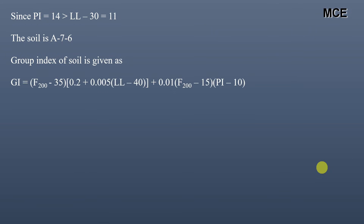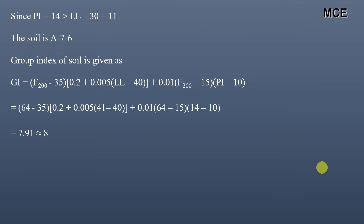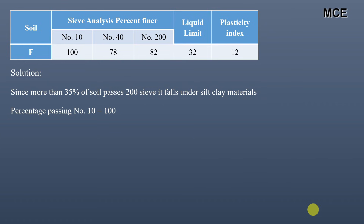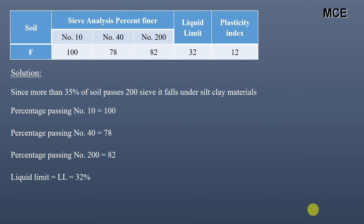The group index of soil E comes out to be 7.91, which rounds up to 8. The classification of the soil is A-7-6(8). For soil F, 82% passes sieve number 200, so it falls under silt-clay materials. The percentage passing sieve number 10 is 100, sieve number 40 is 78, and sieve number 200 is 82. The liquid limit and plasticity index are 32 and 12 respectively.